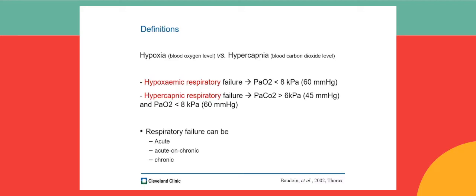In contrast, hypercapnic respiratory failure is defined as an arterial carbon dioxide tension above 45 mmHg and an arterial oxygen tension below 60 mmHg. Respiratory failure can occur acutely — usually within a couple of minutes or a few hours — in patients with none or minor evidence of pre-existing respiratory disease. It can also be acute-on-chronic, meaning an acute deterioration in a patient with pre-existing respiratory failure, which can be fast but usually takes a couple of hours. Last but not least, respiratory failure can also occur chronically, developing over several days or longer in patients with known existing respiratory disease.